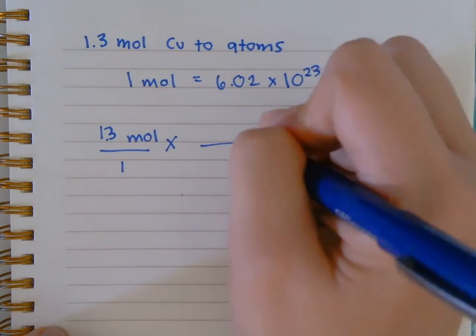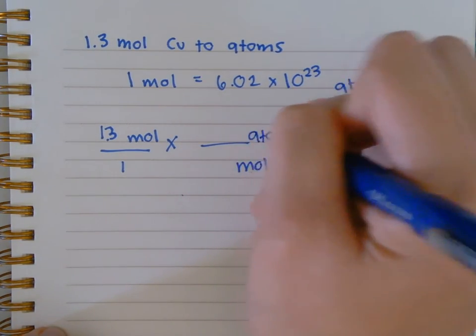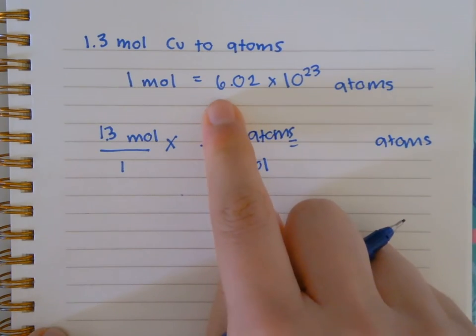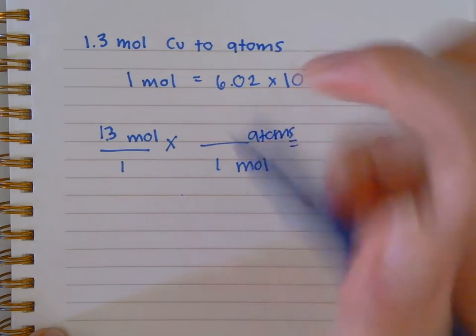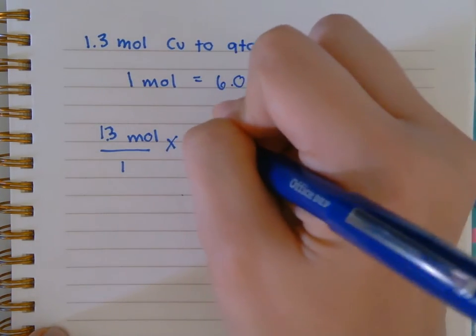What I have to put on top has to be atoms. So basically, in one mole there are 6.02 times 10 to the 23rd atoms.